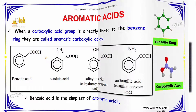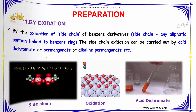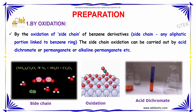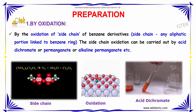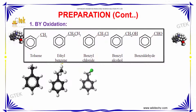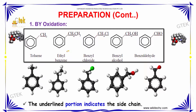Benzoic acid is the simplest of aromatic acids. It is prepared by the oxidation of the side chain of benzene derivatives. The side chain oxidation can be carried out by acid dichromate, permanganate, or alkaline permanganate. The underlined portions indicate the side chain. For example, in toluene, CH3 is the side chain. For ethylbenzene, it is CH2CH3.